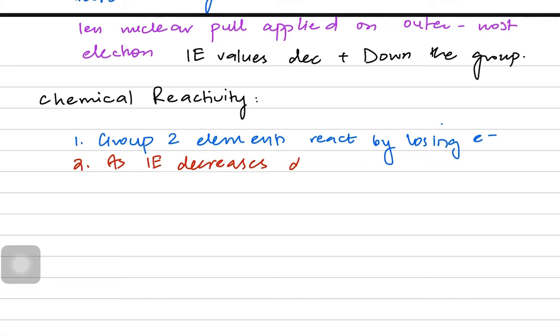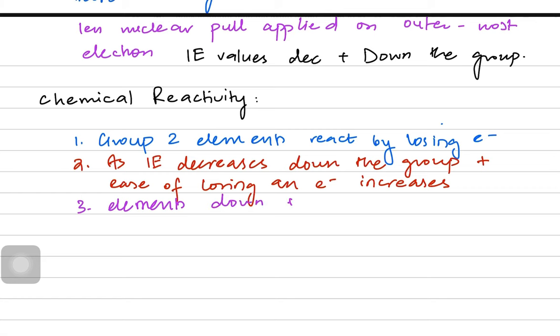As ionization energy decreases down the group, the ease of losing an electron increases because less energy is required. That's why elements down the group are more reactive than those at the top. This is how you explain their chemical reactivity.